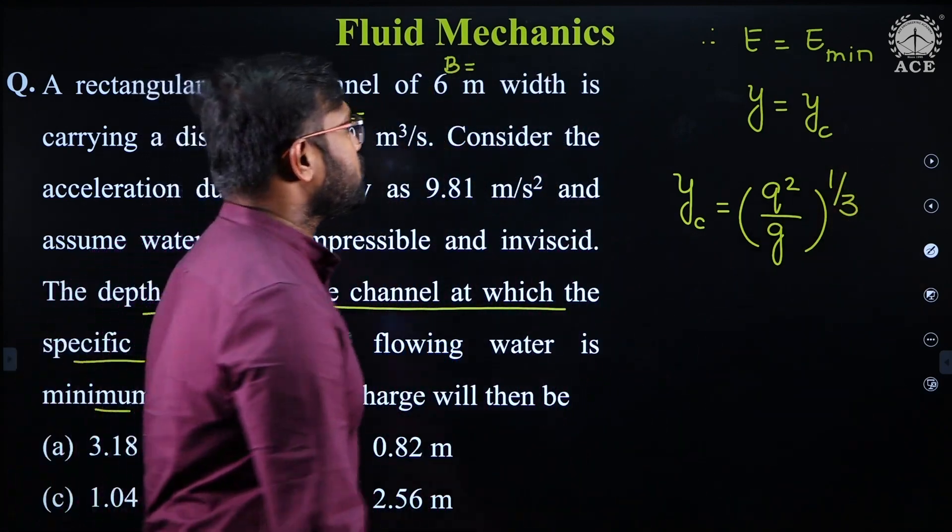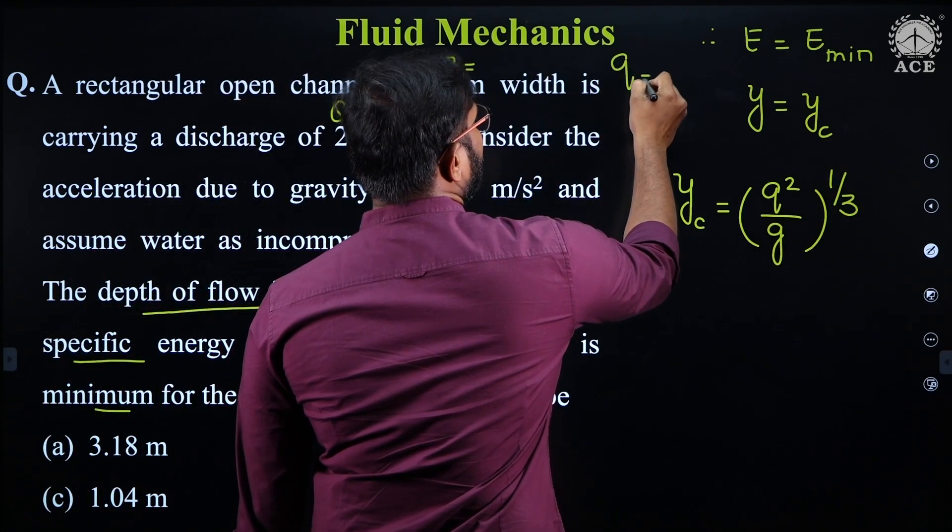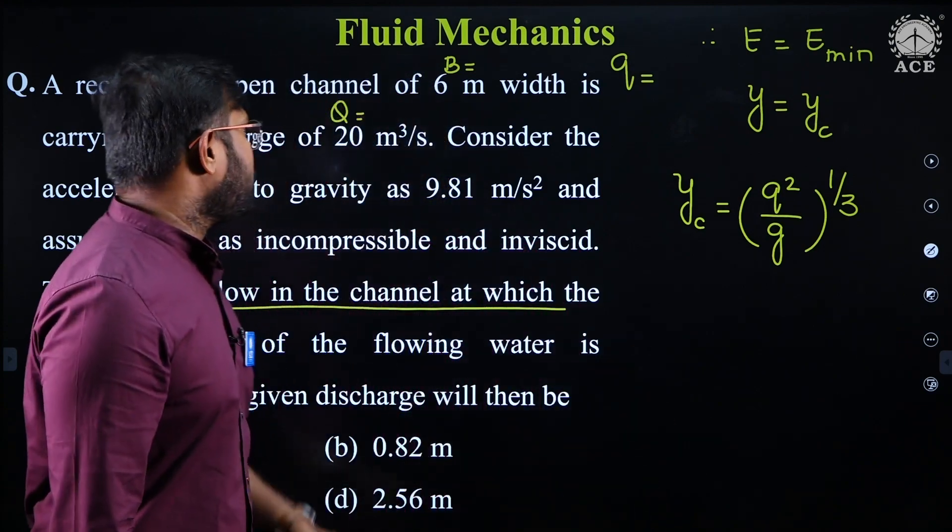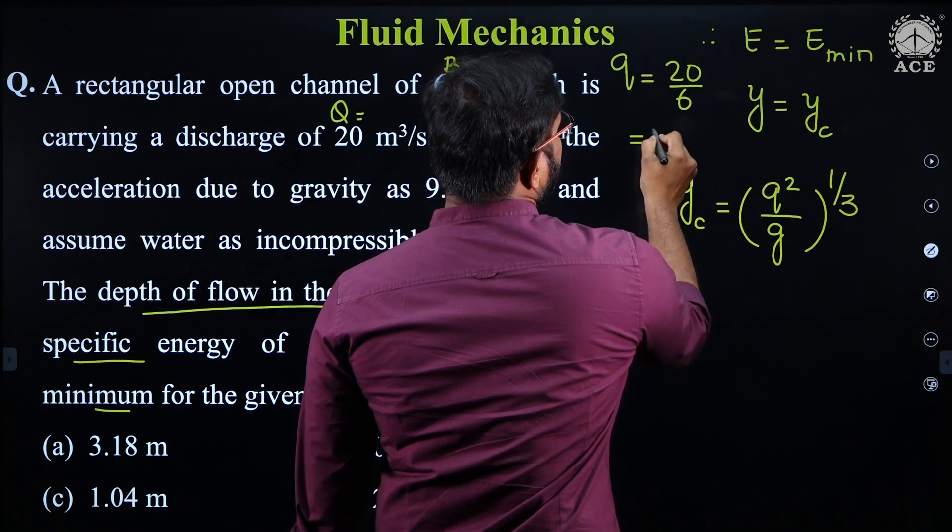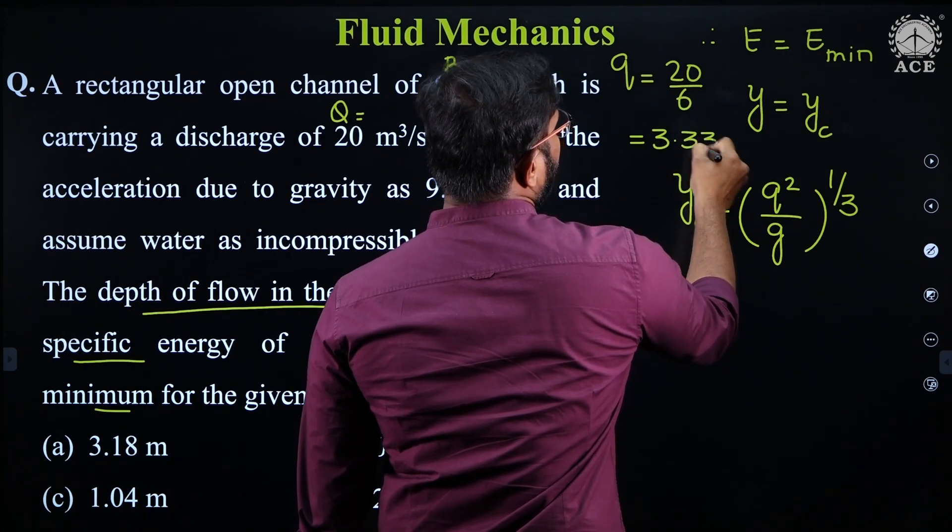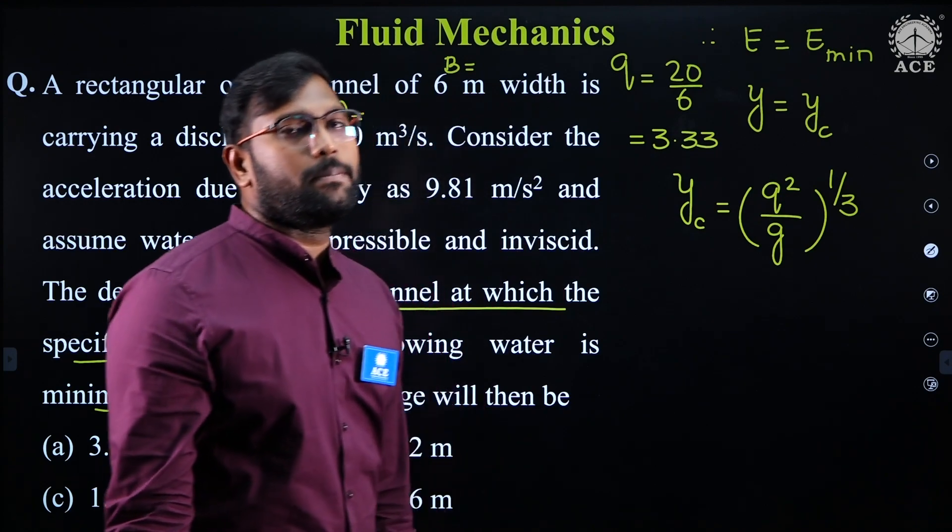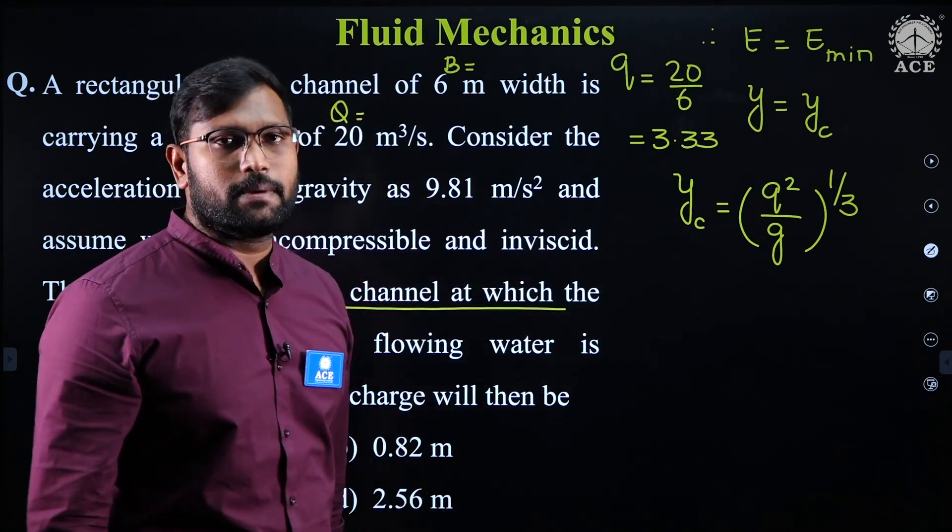And what is small q? The small q is nothing but discharge per unit width. What is discharge? 20 by 6 which is going to be 3.33 meter square per second.